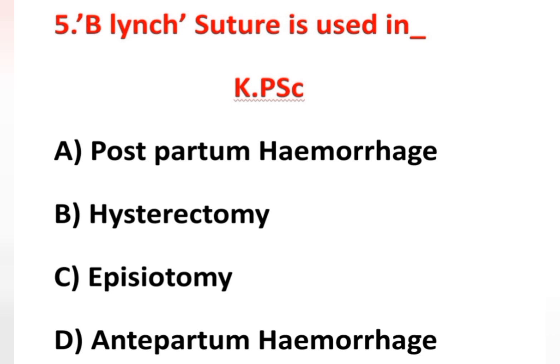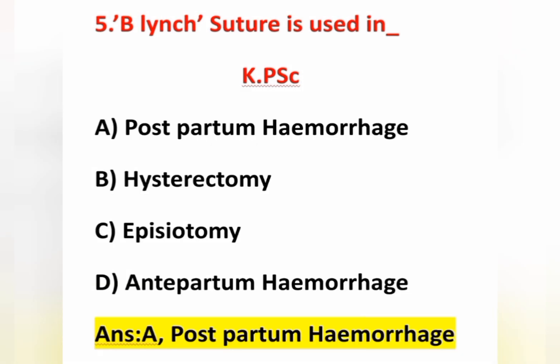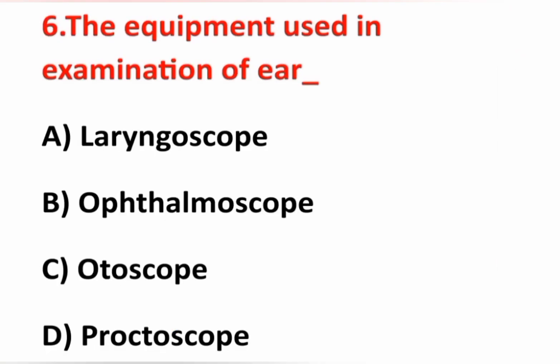Fifth question: B-Lynch suture is used in — option A postpartum hemorrhage, option B hysterectomy, option C episiotomy, option D antepartum hemorrhage. The answer is option A. B-Lynch suture is used in postpartum hemorrhage.